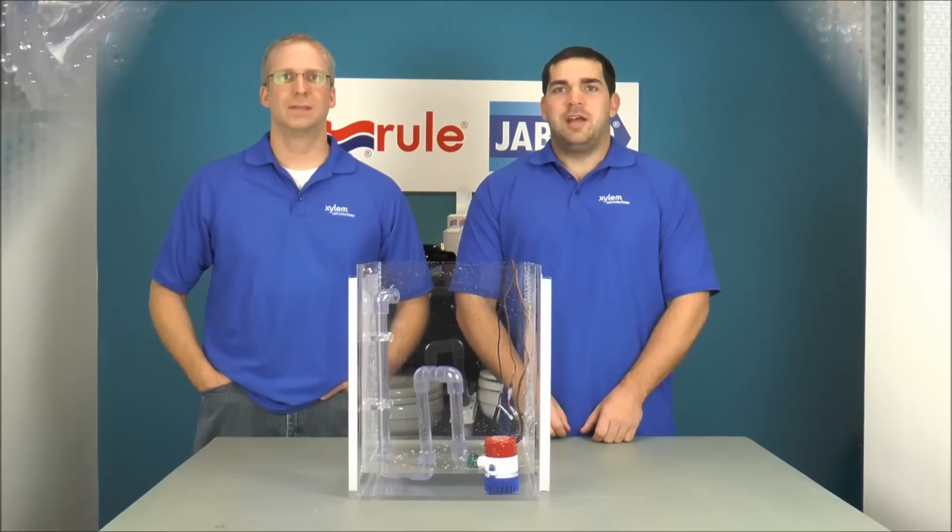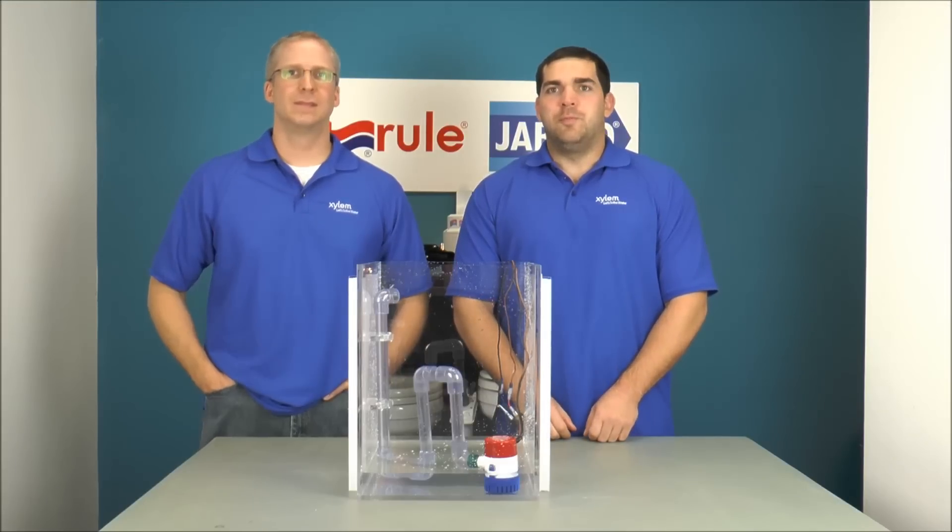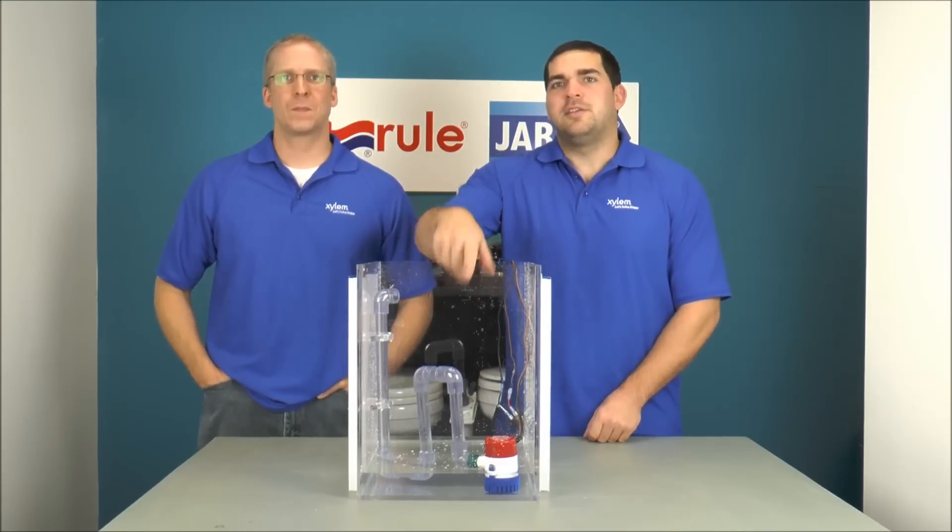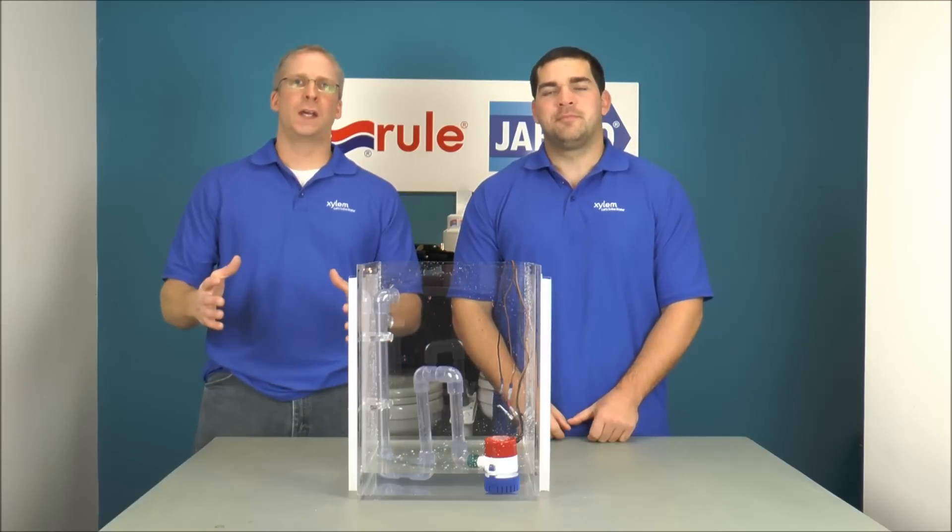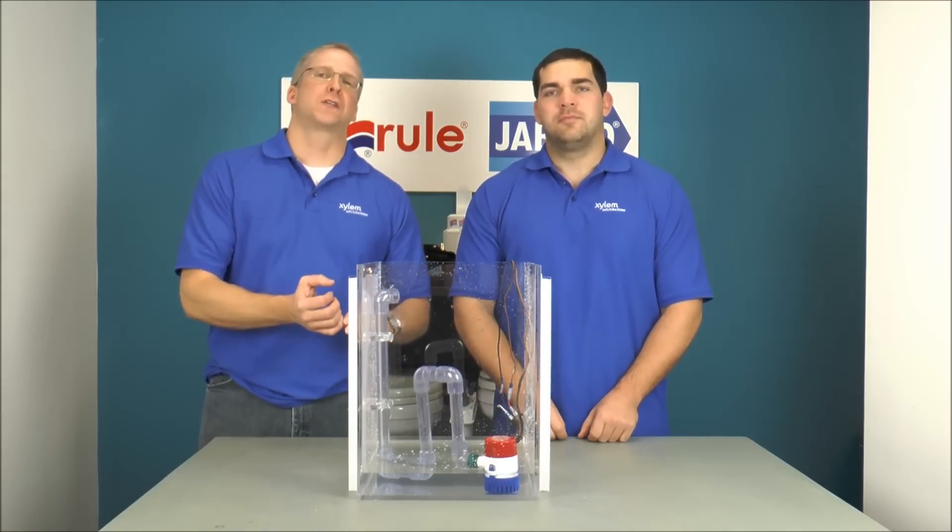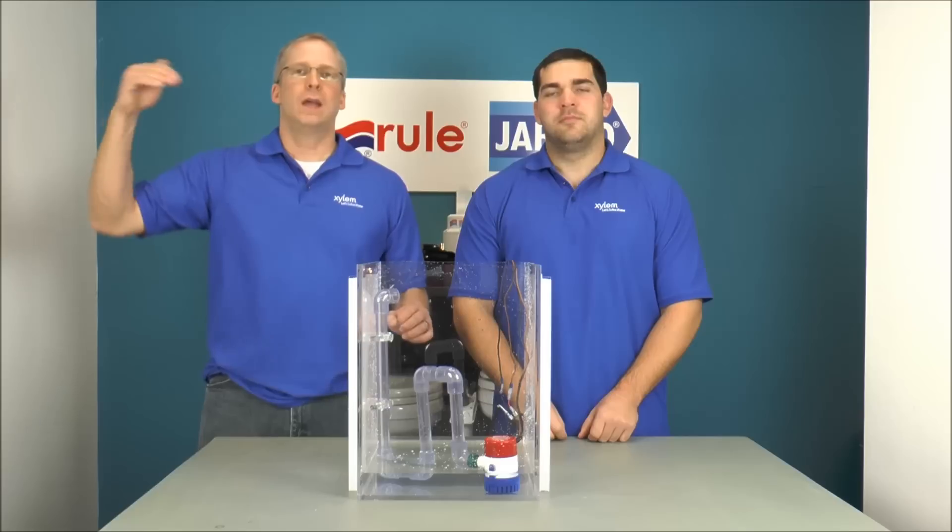So there you have it. We just showed you what happens when your Rule bilge pump has dips and sags in the discharge hose line. Now the big takeaway is run that discharge line continuously upwards. If you have any valleys, that's where water's going to collect and you could cause an airlock.